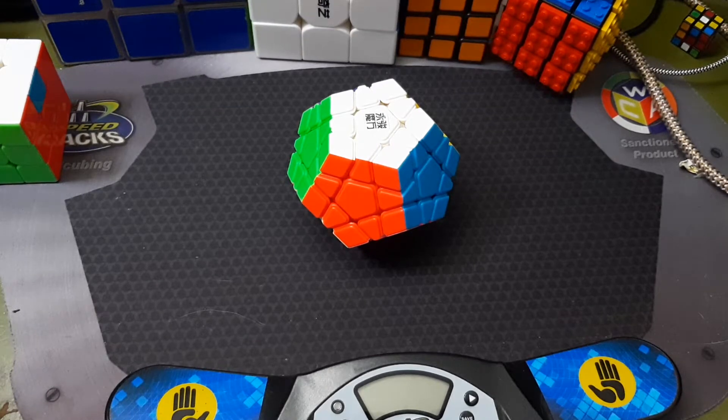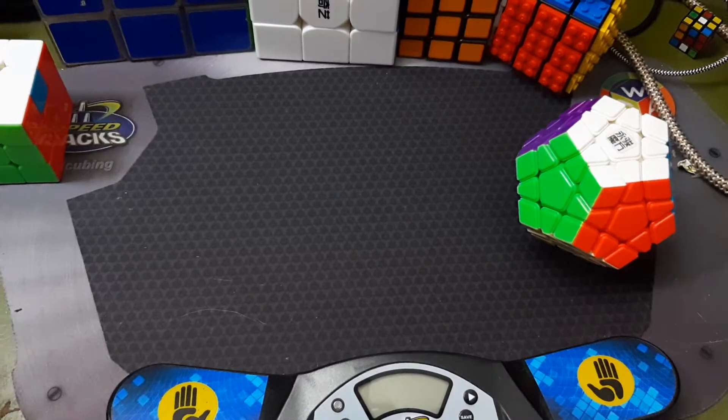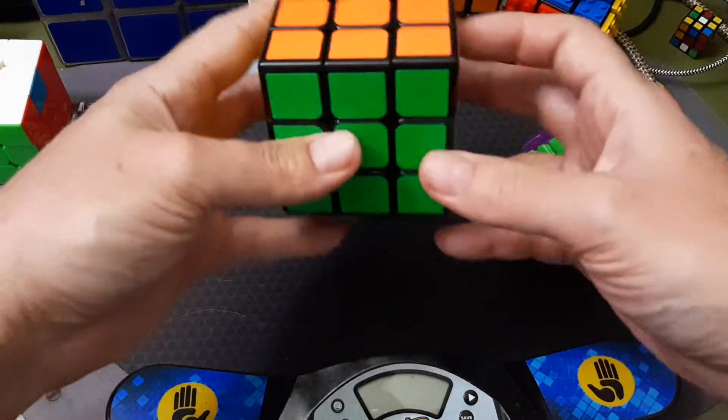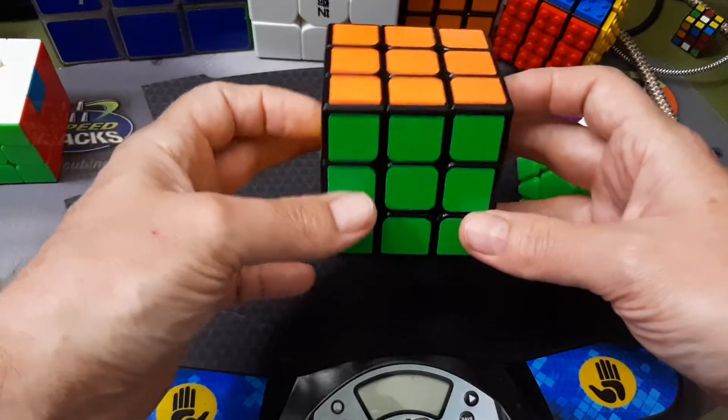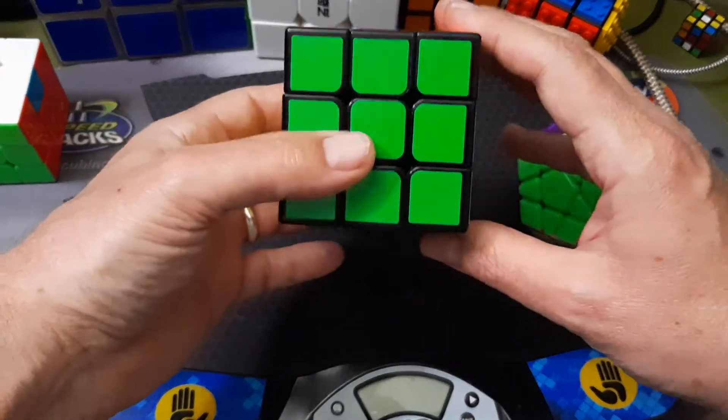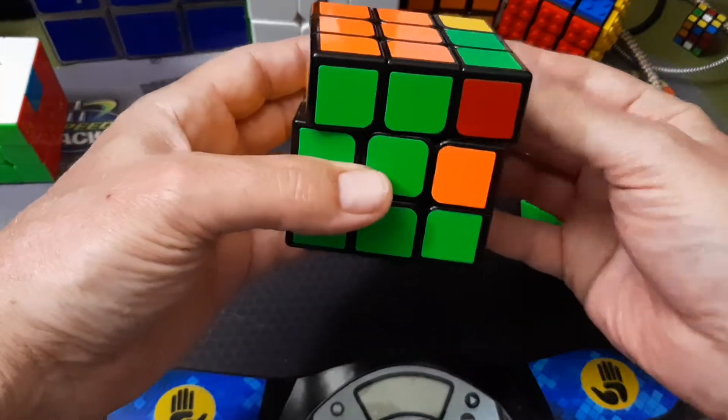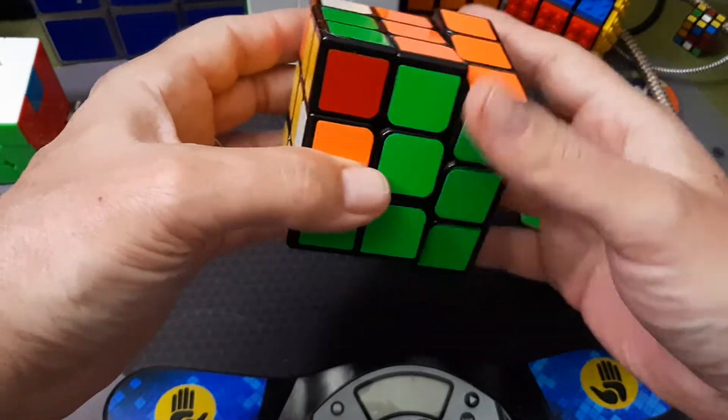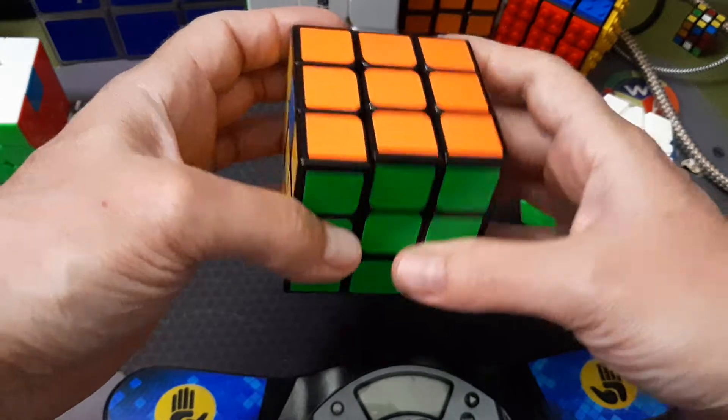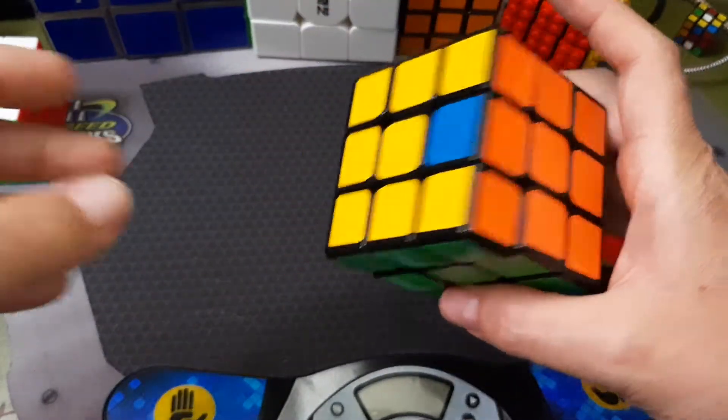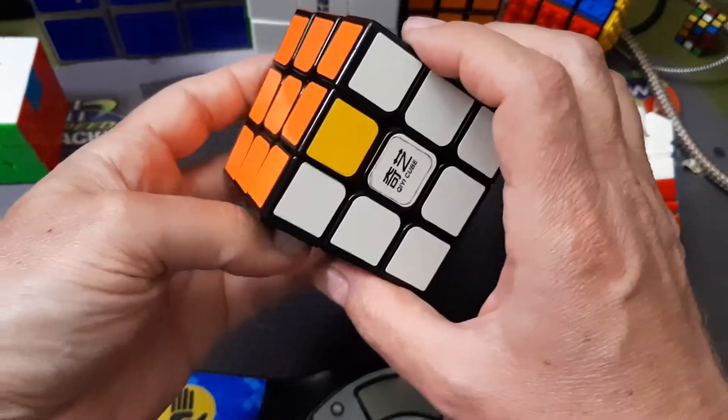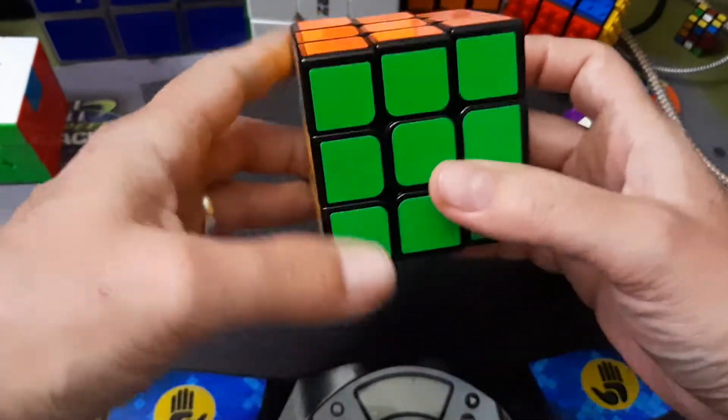Okay, we're gonna do the same move four different ways, but first I'm gonna show you on a regular 3x3 and all that does is it's a three cycle of edges. To reverse it you just start with left instead of the right.